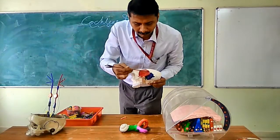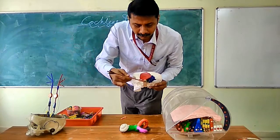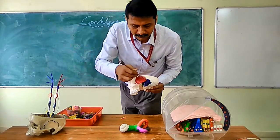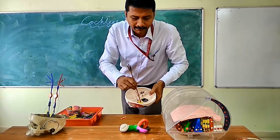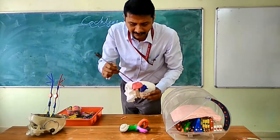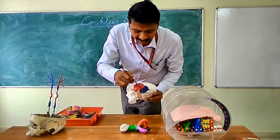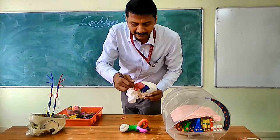Here we have the temporal bone coded in colours — one, two, three and four parts: the petrous part, the squamous part, the mastoid part, and the tympanic part.